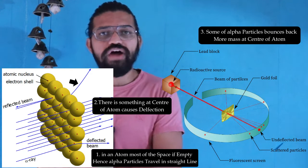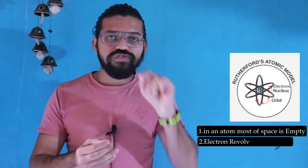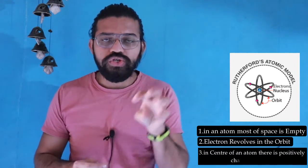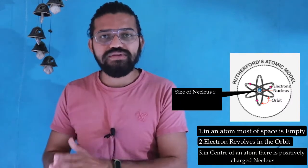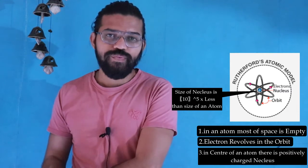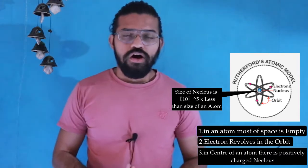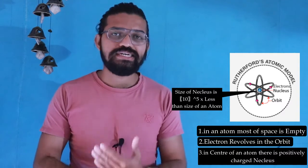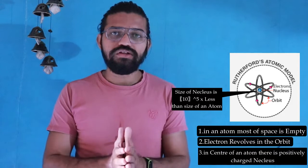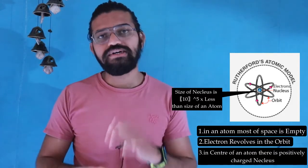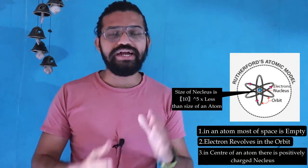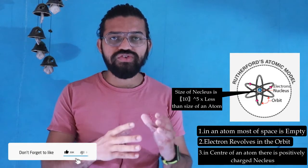Based on these observations, Rutherford hypothesized the structure of the atom. He showed that most of the space in an atom is empty, electrons revolve in orbits, and at the center there is a highly positively charged nucleus. This nucleus is about 10 to the power of 5 times smaller than the size of the atom. With this, the plum pudding model became false, and Rutherford's nuclear model became widely accepted after his 1911 experiment.